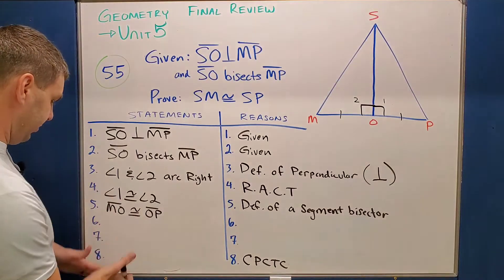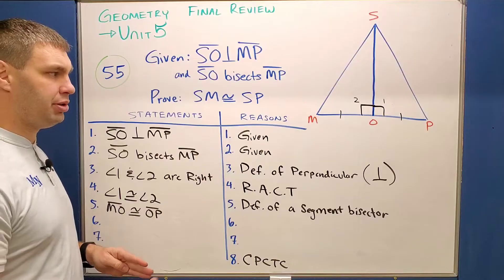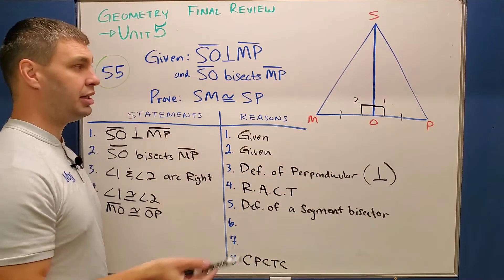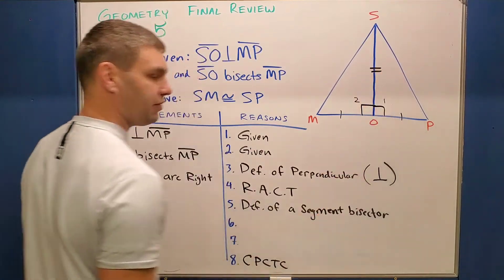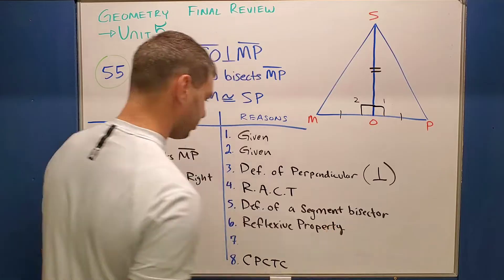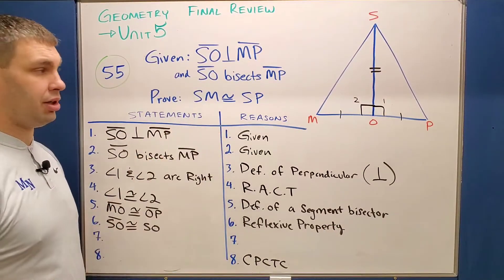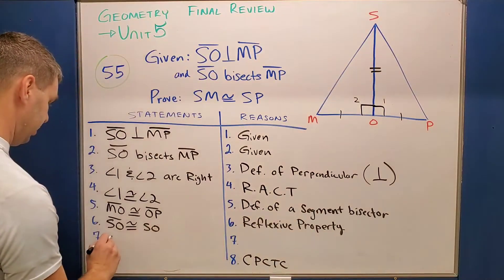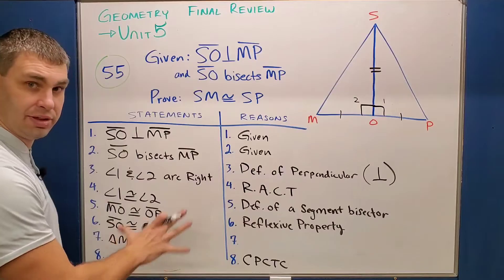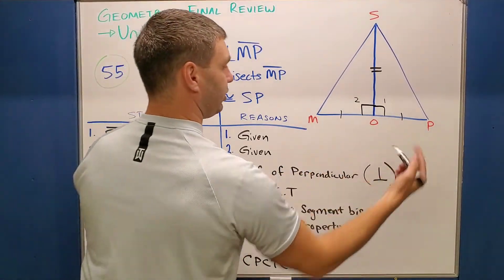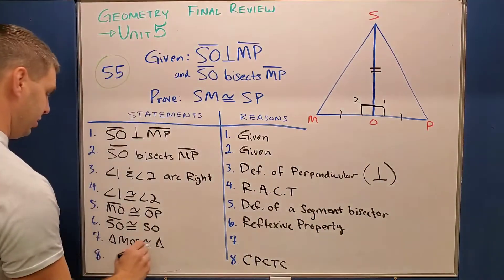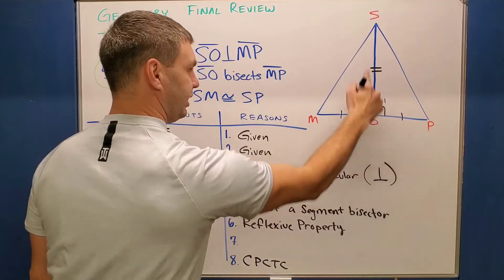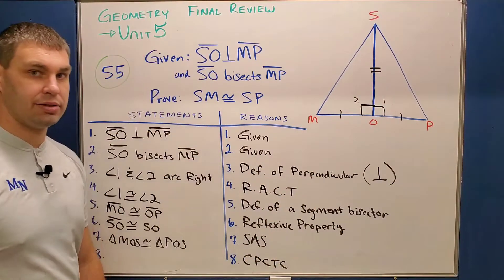We're almost done — looks like maybe three lines left. The next thing I want to prove is that this shared side is reflexive. SO is shared by both triangles, so I can say SO is congruent to itself — SO — by the reflexive property. That gives me enough information to show these two triangles are congruent to each other, because I have side-angle-side. So I'm going to say triangle MOS is congruent to triangle POS. You have to be careful that you write your congruent statement the right way. The reason is SAS — side-angle-side triangle congruence.